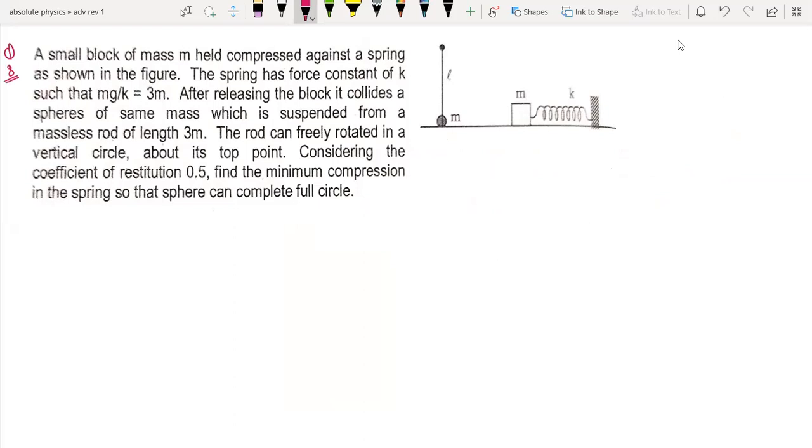The question is: a small block of mass M held compressed against a spring as shown in the figure. So a block compresses the spring. Spring constant K given that mg by K value is 3 meters. After releasing the block, it collides a sphere of same mass which is suspended from a massless rod of length 3 meters.